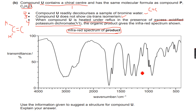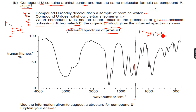Before analyzing the IR spectrum of the oxidation product, there is something important to know about infrared spectra. At wave numbers below 1200 cm⁻¹, we have something called the fingerprint region. Just like every person has a unique fingerprint used in security systems, the fingerprint region is unique to every compound — every compound has a different fingerprint region below 1200 cm⁻¹.